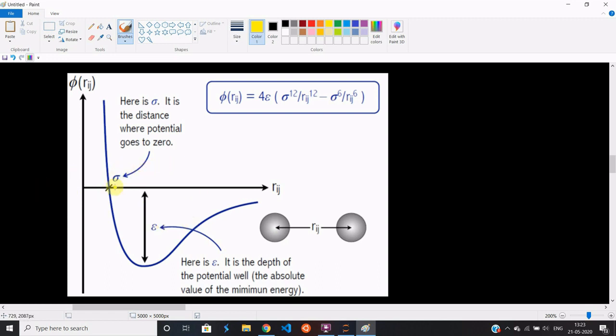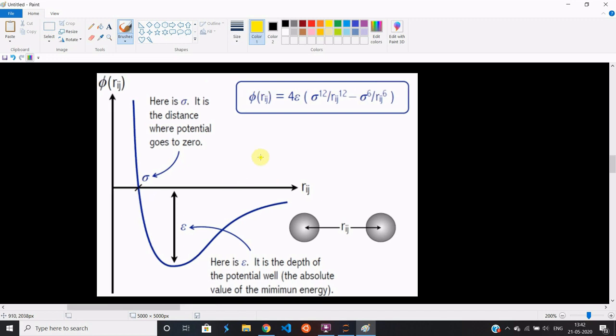Which makes sense intuitively. Why would argon and helium have the same distance as argon and argon at which the potential energy drops to zero? It all depends on the configuration of electrons and protons.